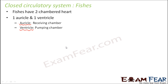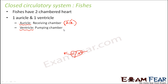Let us suppose this is the heart of a fish, divided into two chambers: auricle and ventricle. The auricle is the receiving chamber — it receives blood — and the ventricle is the pumping chamber — it pumps blood out. A small memory tip: AIR stands for Auricle Is Receiving chamber, and VIP stands for Ventricles Is Pumping chamber.